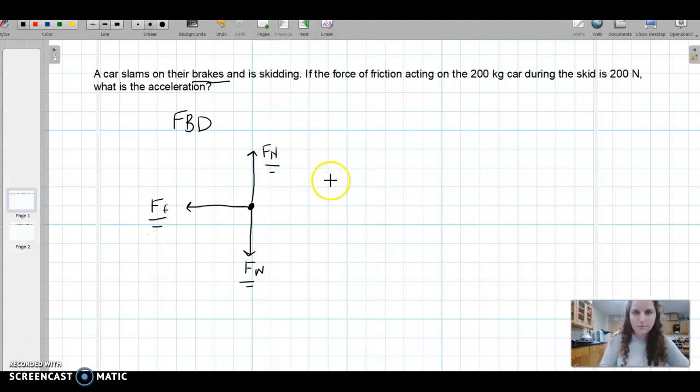Another thing that we are given in this problem is the mass. We have a mass of the car, 200 kilograms. And the force of friction acting on the 200 kilogram car during the skid is 200 newtons. So we are given the force of friction here, 200 newtons.